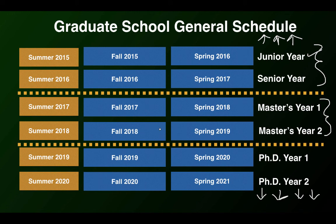What I'm going to do next is focus on this block right here — the final spring semester of your master's program. We're going to take a look at the dates in here, and then work backwards each semester from there all the way back up to the fall of your junior year, to find out what has to happen in order to make all of this successful.